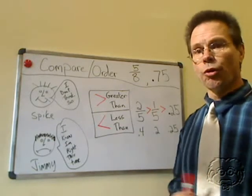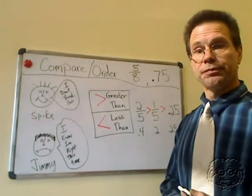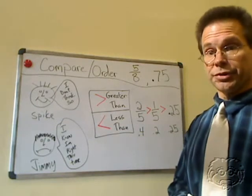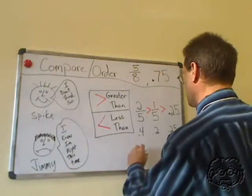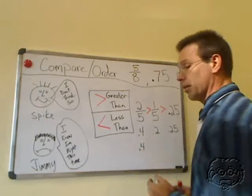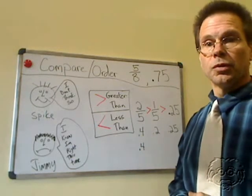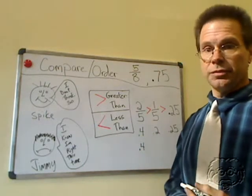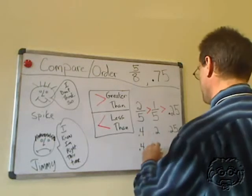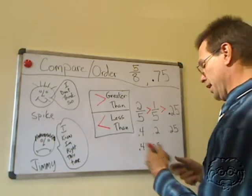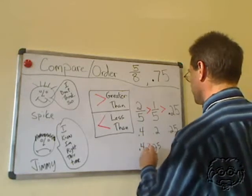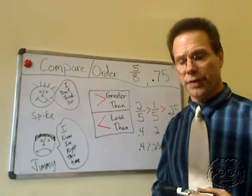Now we're going to reorder our decimals from largest to smallest using our symbols. Our first one is correct. 0.4 is our largest decimal. Which one would come next would be 0.25. And we'll use the symbol greater than to show that 0.4 is greater than 0.25.